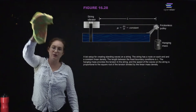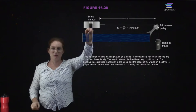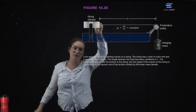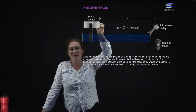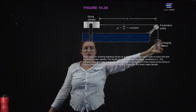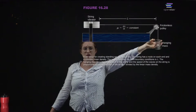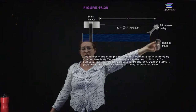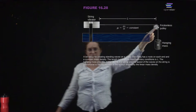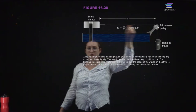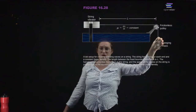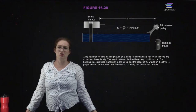Here's how you can set this up. You have a string vibrator in the laboratory — a standard physics lab setup. You have a string, and you change the tension by hanging a different mass on the string. Make the approximation that this is a frictionless pulley so the pulley only changes the direction of the tension in the string.